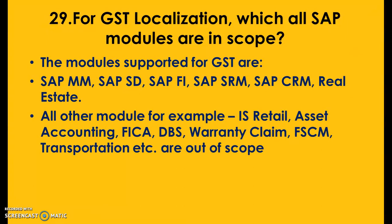For GST localization, which SAP modules are in scope? The modules supported for GST are SAP MM, SAP SD, SAP FI, SAP SRM, CRM, and real estate. MM people interact with vendors, SD people connect with customers, and Finance is the core of the entire business — all are impacted significantly. Supplier relationship management, customer relationship management, and real estate are also in scope. Modules out of scope include industry-specific retail, asset accounting, controlling, DVRs or warranty claims for financial services, corrections management, and transportation.